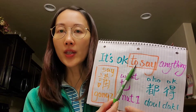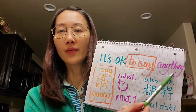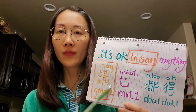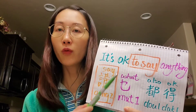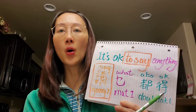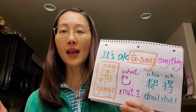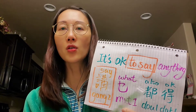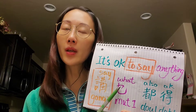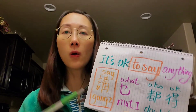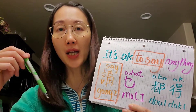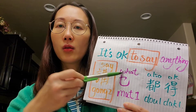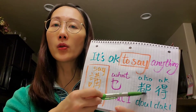You see the structure is different. In English, we say 'it's okay, and then to say (the verb), and then anything.' But in Chinese and Cantonese, we say the verb 講 first, and then 乜 or 乜嘢 — the question word for 'what.' So 'it's okay to say anything' is 講乜都得. Note that 乜 is the short form of 乜嘢. Another way to say 'what' is 咩, so you can also say 講咩都得. We have different ways to say 'what' — just put that question word here.